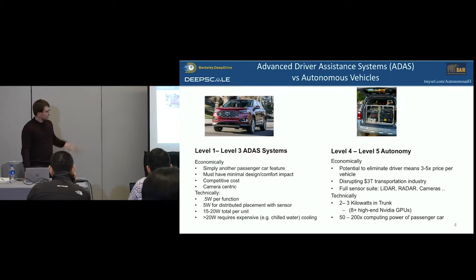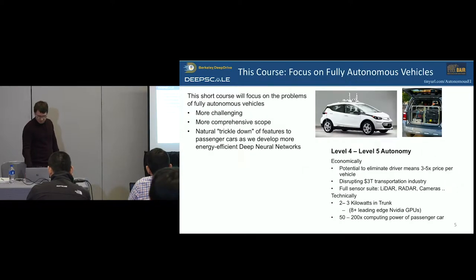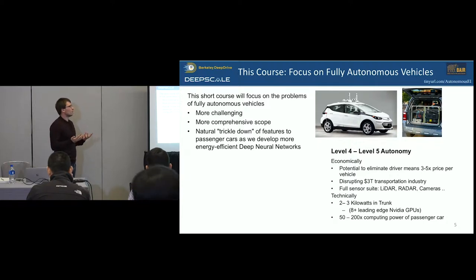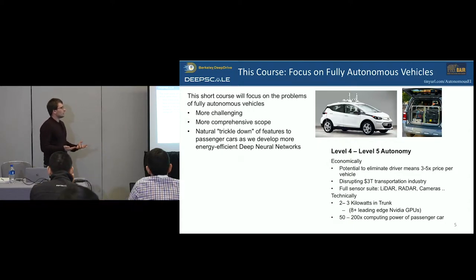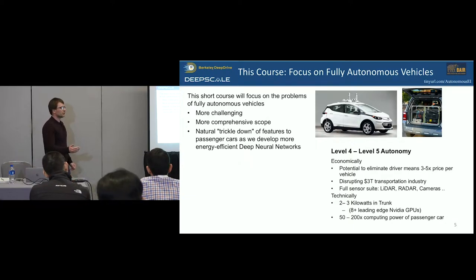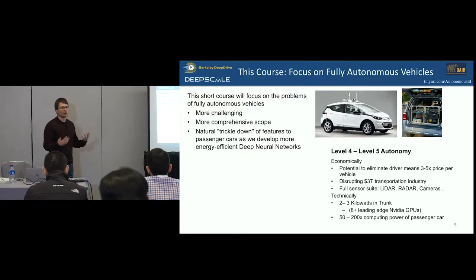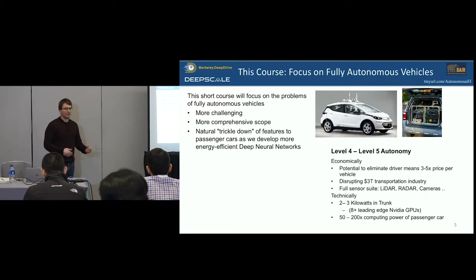These are the most common games for people to be playing, and by the end of this hopefully you'll know a bit more about how people are playing those. In this course, I'll focus primarily on problems as they apply to level four autonomy — fully autonomous vehicles — because they're more challenging, have a more comprehensive scope, and there are lots of opportunities for trickle-down of innovations: more energy-efficient neural nets, reducing the cost of hardware, and potentially relying more on infrastructure.